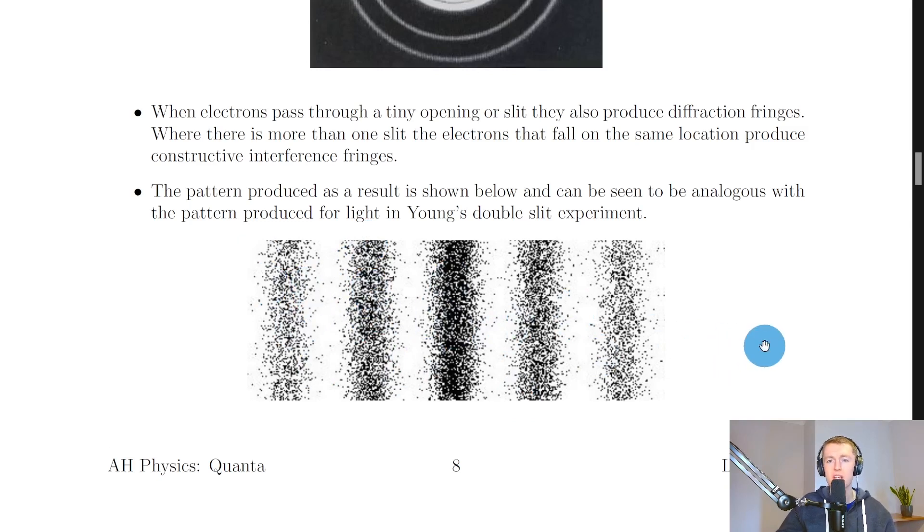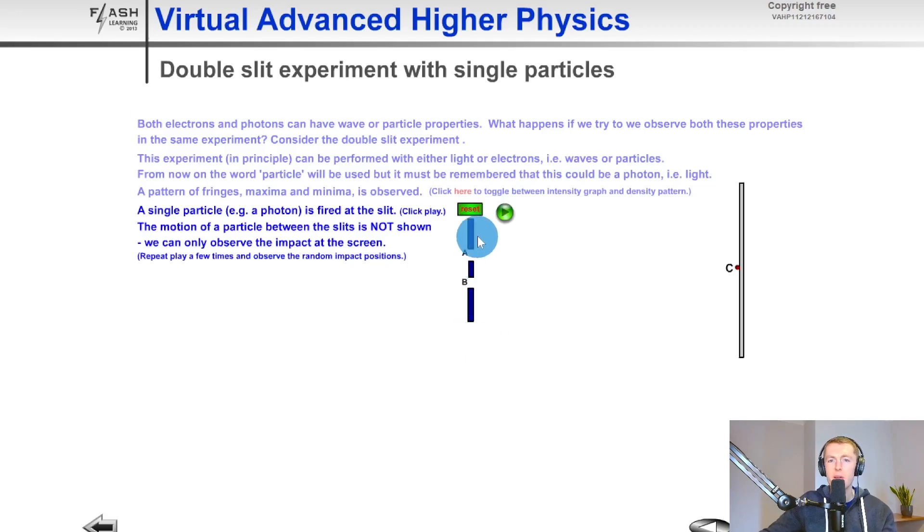Just to show you a quick simulation to help you visualise this. Here we have a double slit with slits A and B and we've got a screen over on this side here and it says a single particle is fired at the slit. The motion of a particle between the slits is not shown, we can only observe the impact at the screen. So if we click play here you can see that when the particle hits the slits, it's going to appear at some point on the screen over at this side and you'll see it's pretty random as to where it's going to hit.